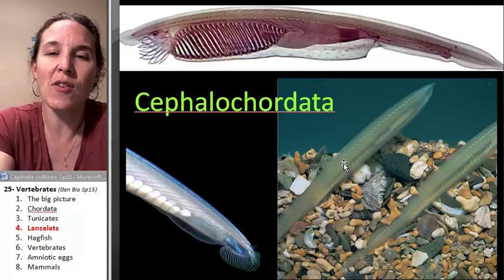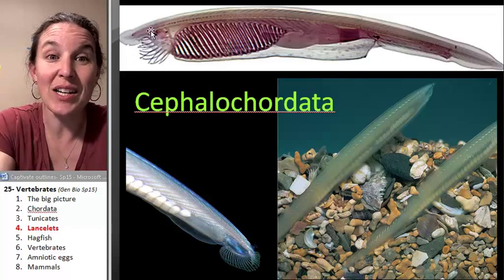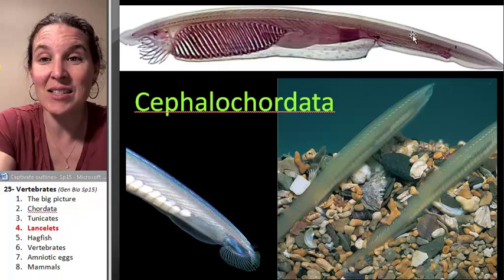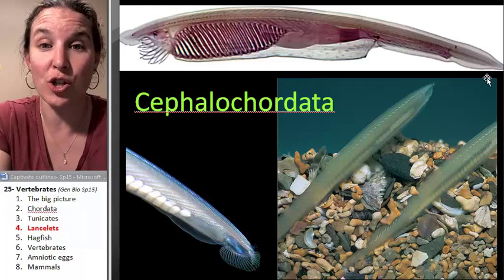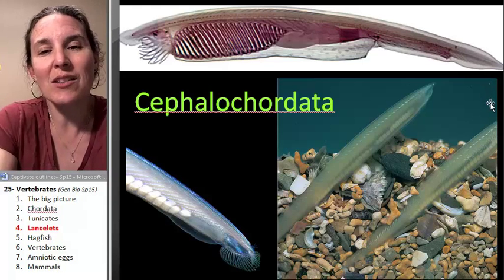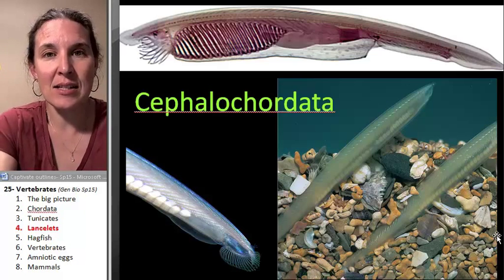So they've got the pharyngeal gill slits. They've definitely got a post anal tail. You can get a great idea that they've got some kind of like little notochord, spinal cord type structure going on. And really, they look like little fish to me. They are our next step in the process.